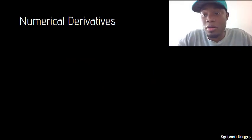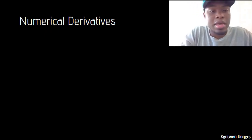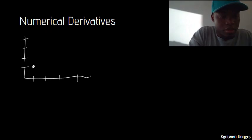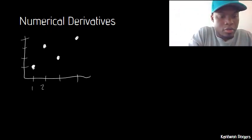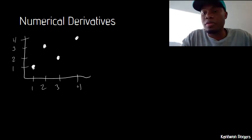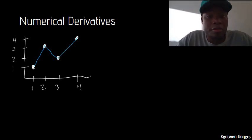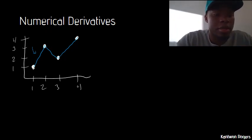First let us talk about numerical derivatives. What I mean by this is, let's say I had some data with points plotted on a graph. The numerical derivative gives me the actual slopes between each point — so if I were to connect these points, the numerical derivative would give me the slope of each connecting line.